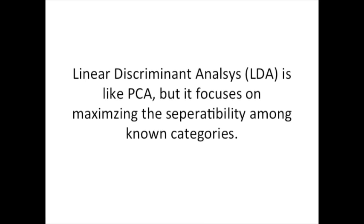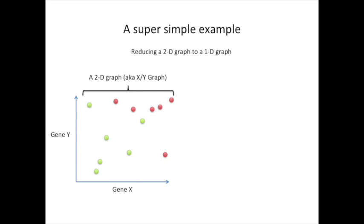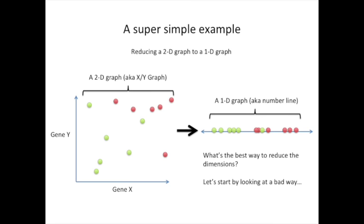Let's repeat that to emphasize the point. Linear discriminant analysis, LDA, is like PCA, but it focuses on maximizing the separability among the known categories. Here we're going to start with a super simple example. We're just going to try to reduce a two-dimensional graph to a 1D graph. That is to say, we want to take this two-dimensional graph, aka an XY graph, and reduce it to a one-dimensional graph, aka a number line, in such a way that maximizes the separability of the two categories.